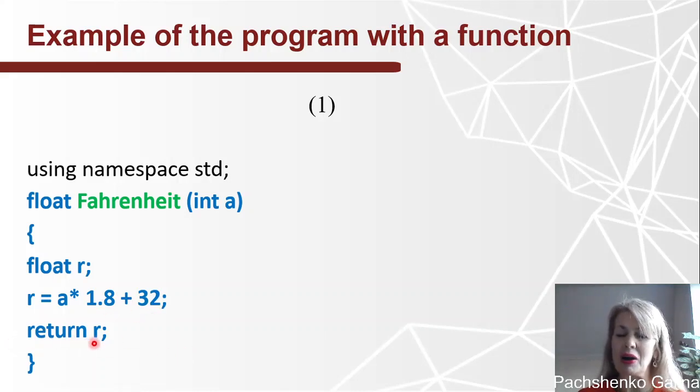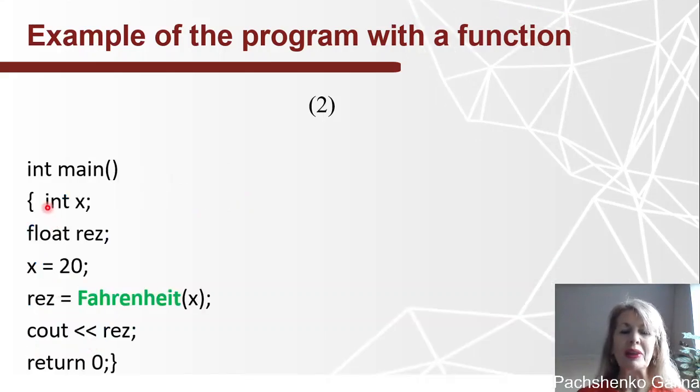And let's consider main function. Here we declare variable x of type int and variable res of type float. X is equal to 20, and our result is equal to, here we call our function Fahrenheit, and display on the screen our result.